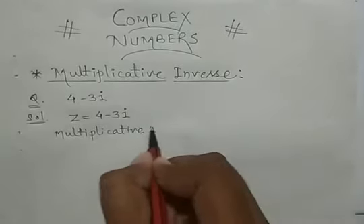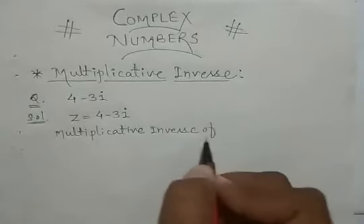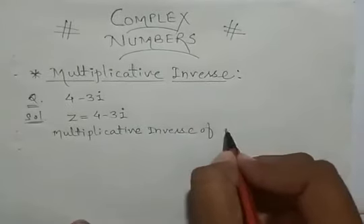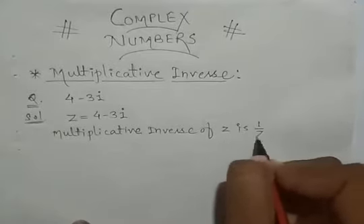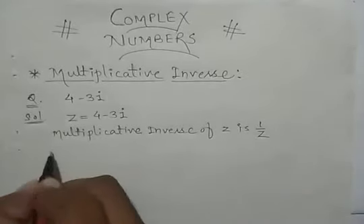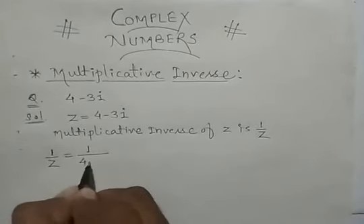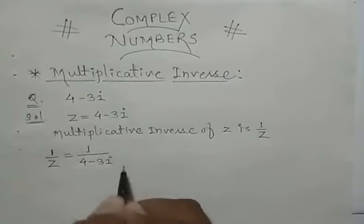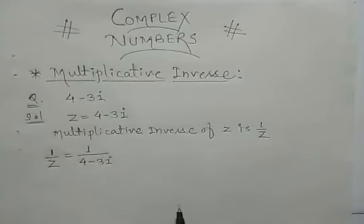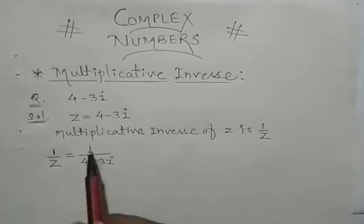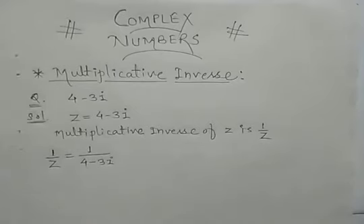So, the multiplicative inverse of z is 1 by z. When you do 1 by z, it becomes 1 upon 4 minus 3 iota. Now, whenever you represent a complex number, the iota should never be in the denominator.